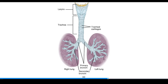Branching off the trachea we have the primary bronchi — one going to either lung — and then within the lung the primary bronchi branch into secondary bronchi, one going to each lobe: three to the three lobes on the right lung and two to the two lobes on the left lung. Then branching off are the segmental or tertiary bronchi going to each of the different segments within the lung. Branching off further are smaller and smaller bronchi called interlobular bronchi that eventually give rise to microscopic tubules called bronchioles, ending at the terminal bronchioles that give rise to the respiratory structures.